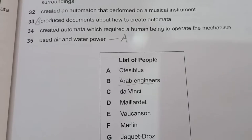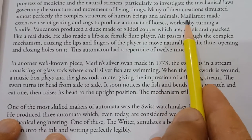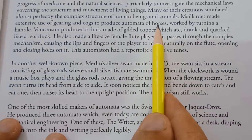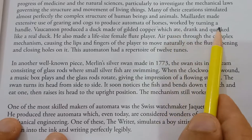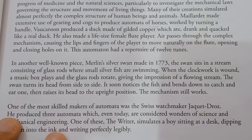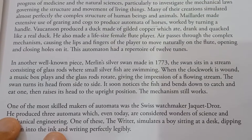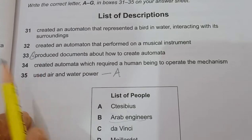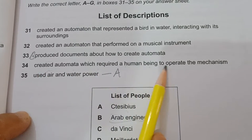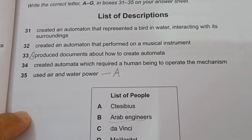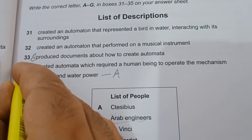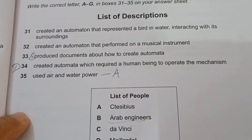The next person is Maillardet (D). The passage says Maillardet made extensive use of gearing and cogs to produce automata of horses — automatic horses worked by turning a handle. Handles are operated by human beings with their hands. Looking at Statement 34: 'Created automata which required a human being to operate the mechanism.' A handle requires human operation, so the answer to Question 34 is D.